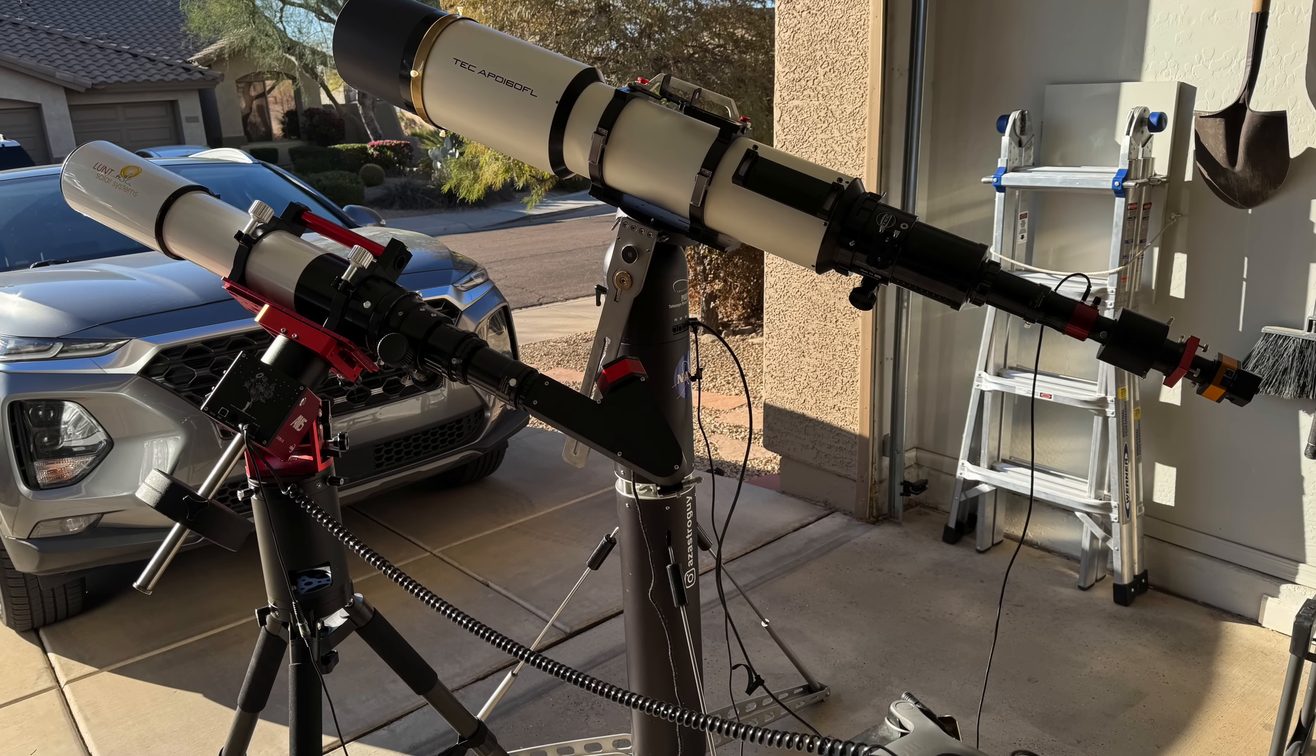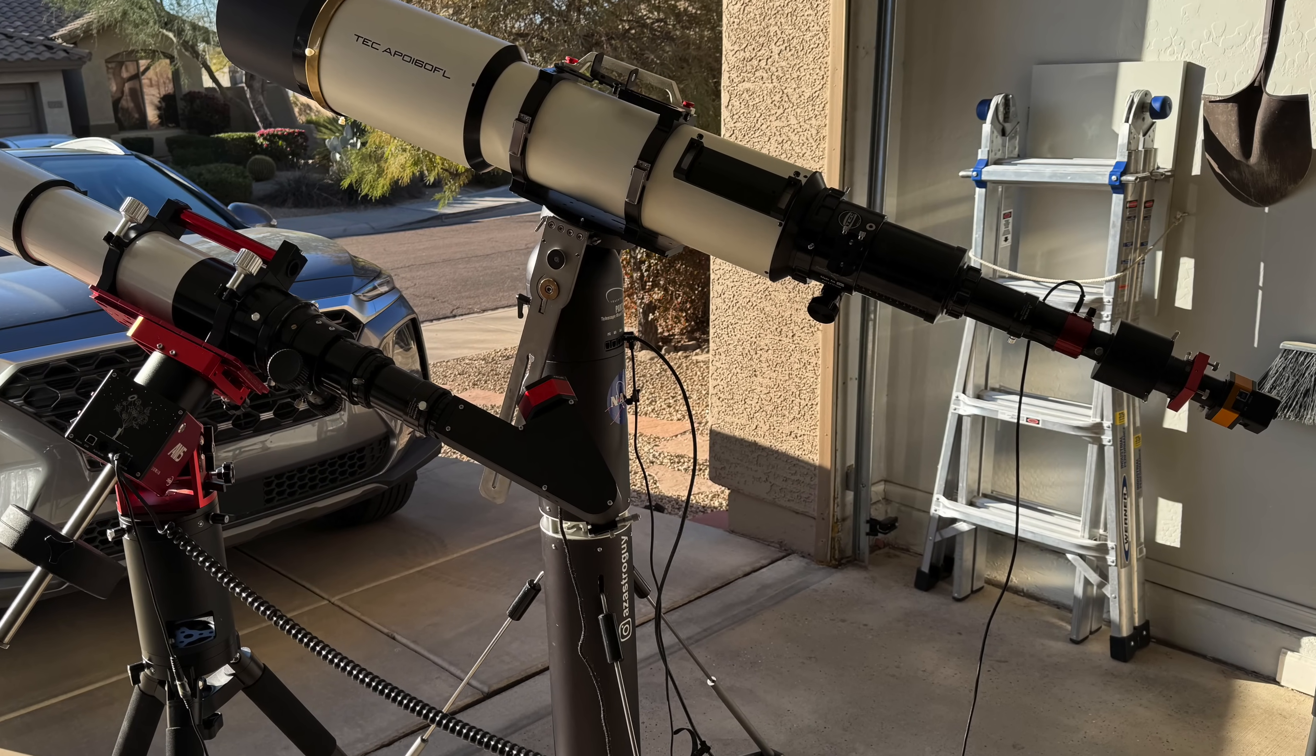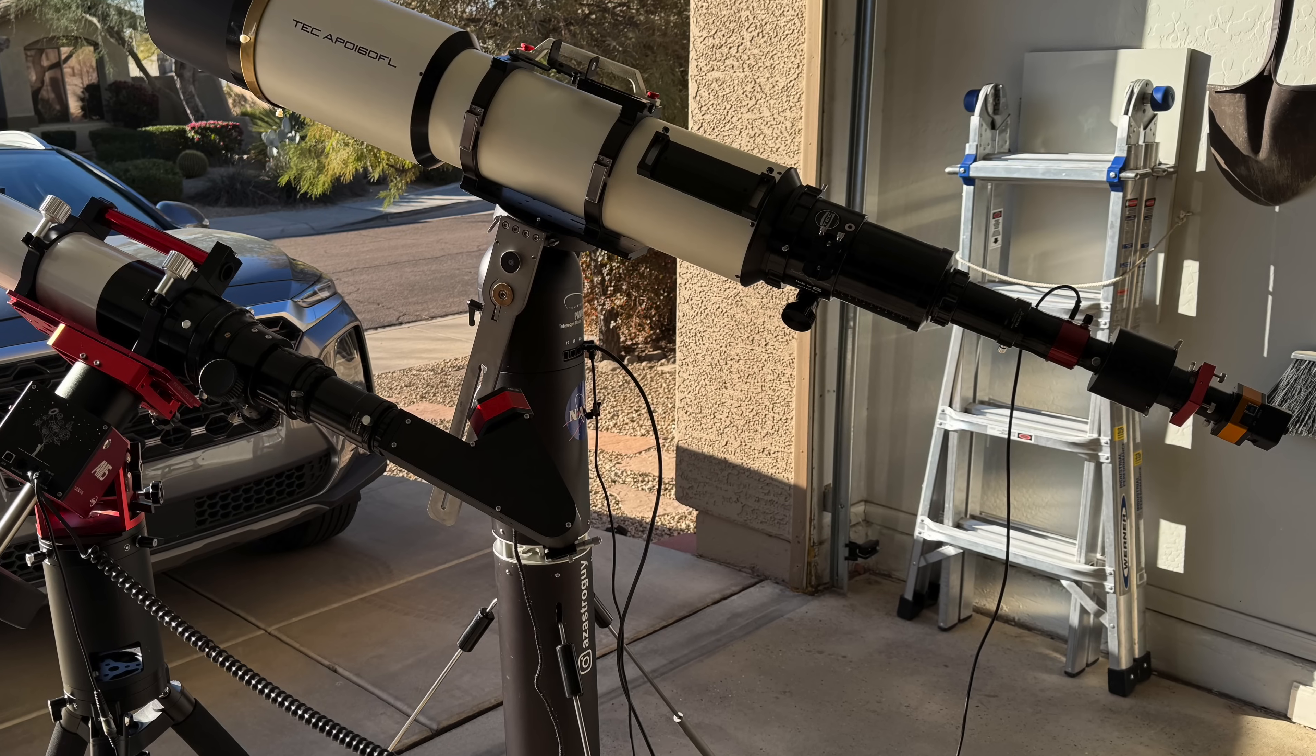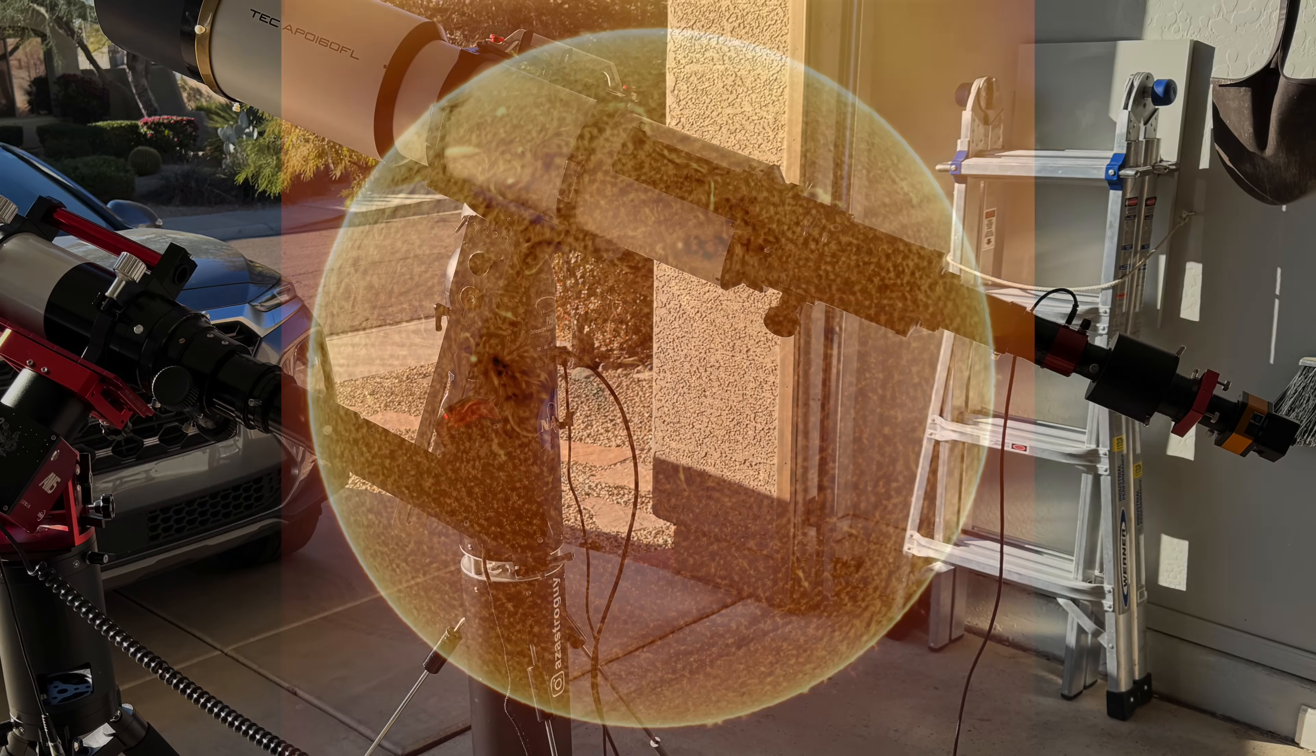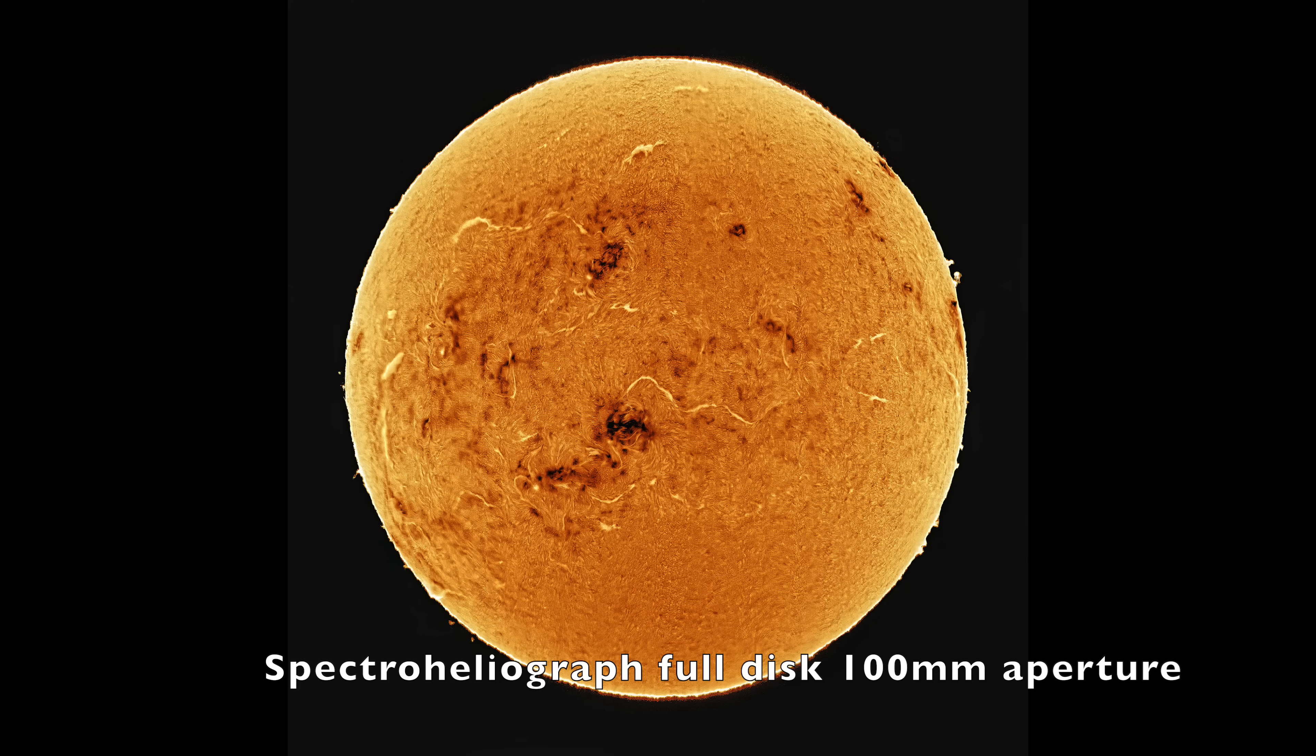What are the pros and cons of a spectroheliograph versus a hydrogen alpha etalon-based telescope? Advantages of the spectroheliograph include ultra-high contrast. Typical etalon design contrast is 0.5 to 0.7 angstroms. A spectroheliograph can get to 0.18.